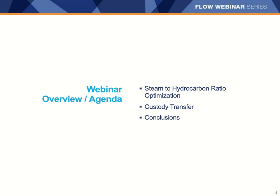During this webinar, we're going to discuss how to optimize the steam to hydrocarbon ratio and talk about some of the benefits of being able to do that. We'll talk about how to improve custody transfer measurement. I'll share a story about a customer who implemented our flow technology for their steam to hydrocarbon ratio control and was able to improve their efficiency by 2%. We'll also talk about a chemical company who used Micromotion meters for custody transfer of ethylene and proved that after two years of service, the meter was less than a tenth of a percent different from the laboratory prover. Then we'll wrap up with some final thoughts.